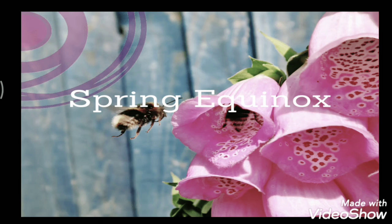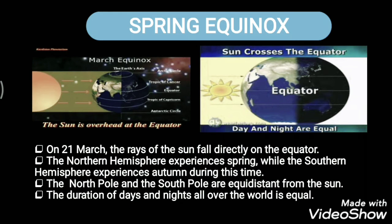When we talk about the spring equinox, the first thing that comes to mind is: what is the meaning of equinox? The word equinox comes from Latin and it means equality of night and day. The equinox occurs at two specific moments in time when the Sun is exactly above the equator.